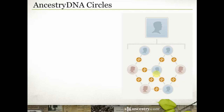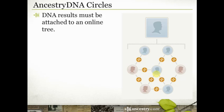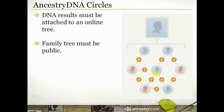In order to be included in a DNA circle, your DNA results have to be attached to an online tree. If your tree is not online, I'd encourage you to export 10 generations of your direct ancestry — it can be a stripped-down, bare-bones flat pedigree — upload that and attach your DNA results to it. Your tree also has to be public, because we're going to show the connections in these groups. So: your tree has to be online, your DNA results have to be attached to it, and your tree has to be public in order to participate in DNA circles.